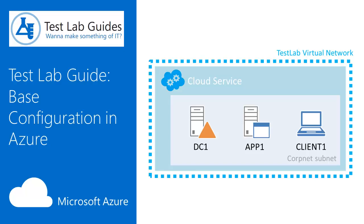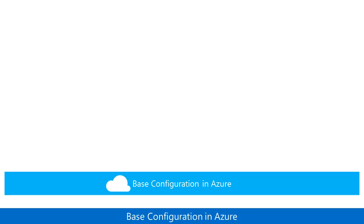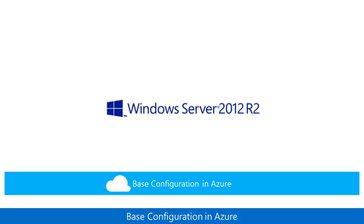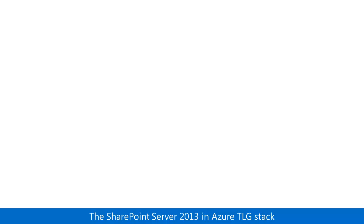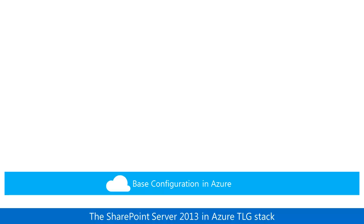Let's step through the Test Lab Guide for setting up the base configuration in Microsoft Azure. The base configuration in Azure Test Lab Guide, or TLG, creates a standard infrastructure upon which other TLGs can build. This base configuration uses virtual machines running Windows Server 2012 R2 that are hosted in Azure Infrastructure Services. The base configuration in Azure is the foundation for other Azure TLG stacks.